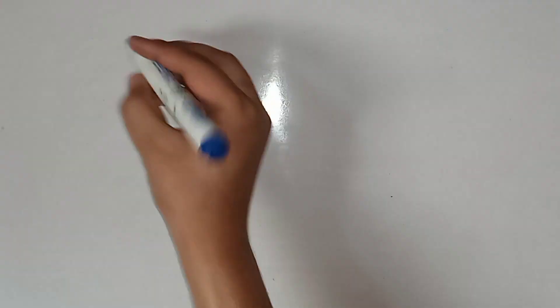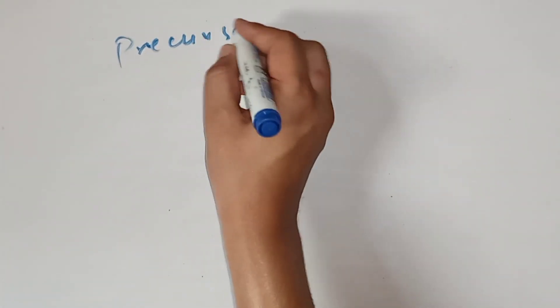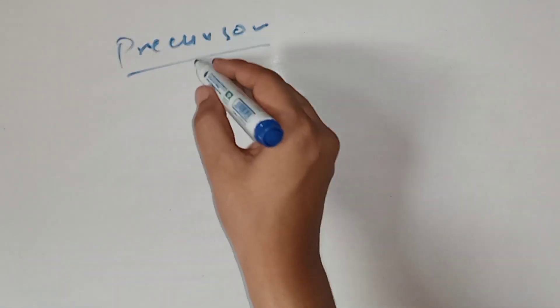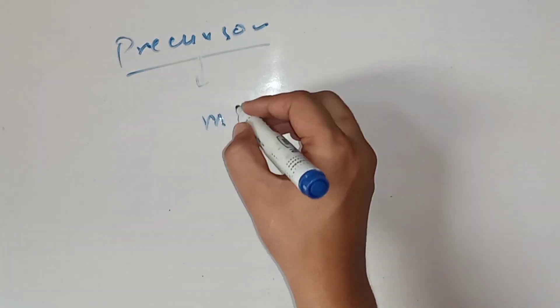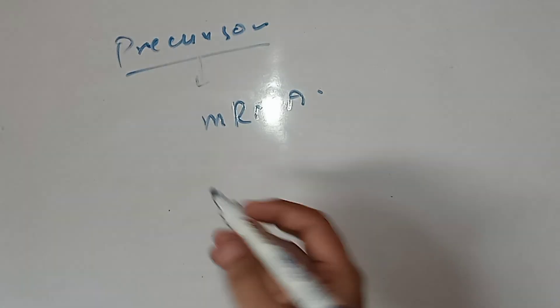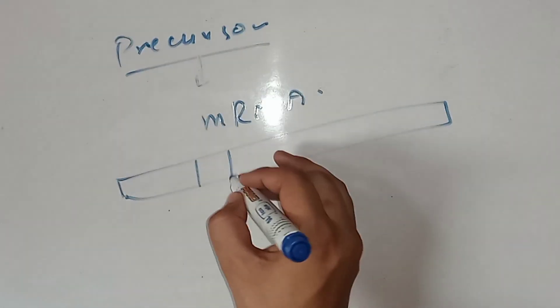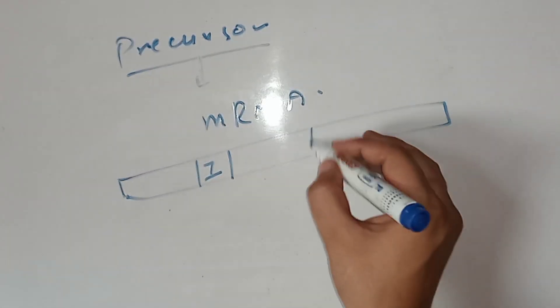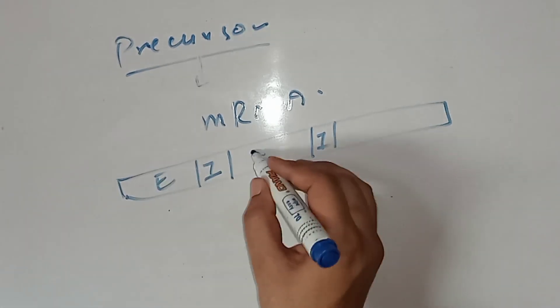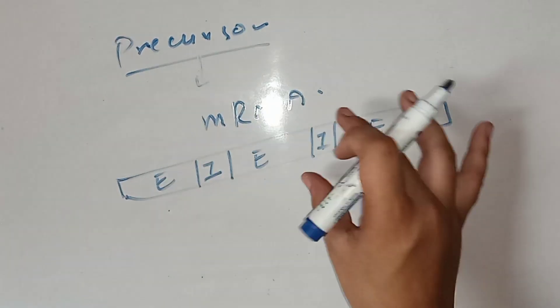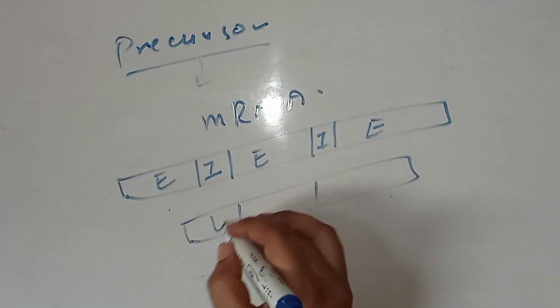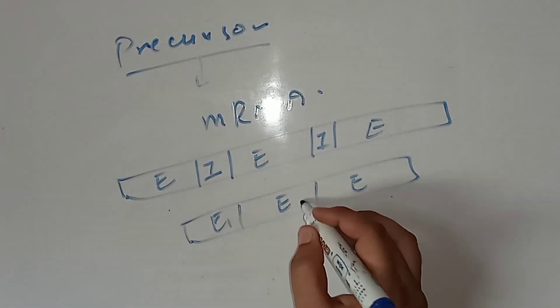Since red blood cells don't have a nucleus, the precursors of red blood cells, before losing the nucleus, synthesize messenger RNA from these genes. This messenger RNA has coding and non-coding sequences — the non-coding sequence is called an intron and the coding sequence is called an exon.